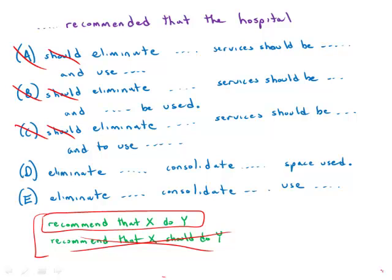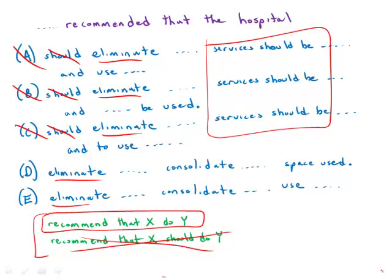The second consideration is that the three recommendations need to be in parallel. So in all five answer choices, the first one, eliminate, is just in a nice present tense verb. Recommend that they eliminate, and so on. Now, in the first three that we've already eliminated, it has this passive construction, services should be consolidated. So that's a passive construction that doesn't reflect the active construction of eliminate. So that's another reason why all three of those are out.